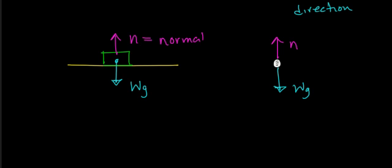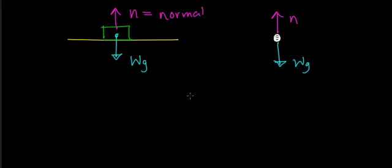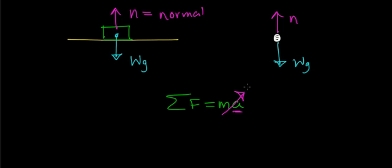Let's look at what Newton's second law says about these two forces. Writing out Newton's second law: the sum of the forces equals mass times acceleration. If you look at a motionless object on a desk or floor, it is not being accelerated up or down — it's not moving, its velocity is not changing. So the acceleration of this object is going to be zero, meaning the sum of the forces equals zero: the forces balance each other out.